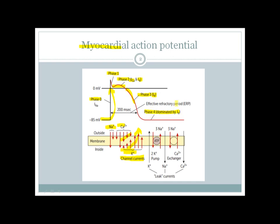Phase four is the resting membrane potential, dominated by movement of potassium ions. It is maintained by the sodium-potassium ATPase pump, which pumps three sodium ions outside the cell and brings two potassium ions inside, creating a net loss of positive charge. This results in a resting membrane potential of approximately minus 85 to minus 90 millivolts.